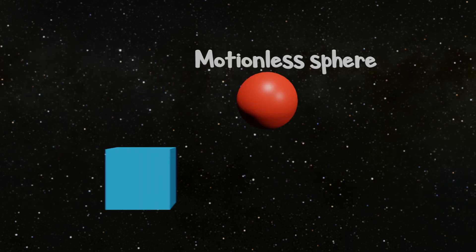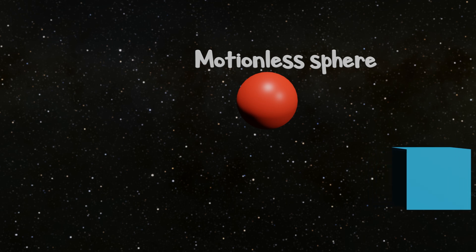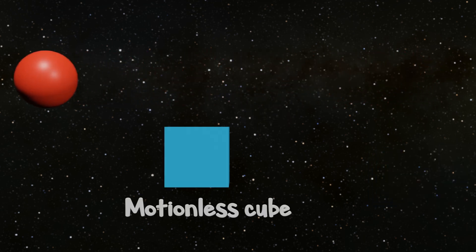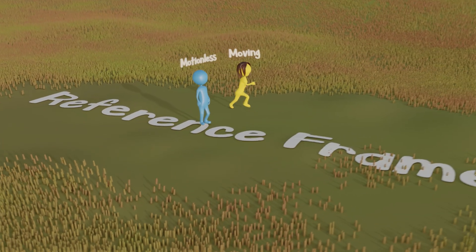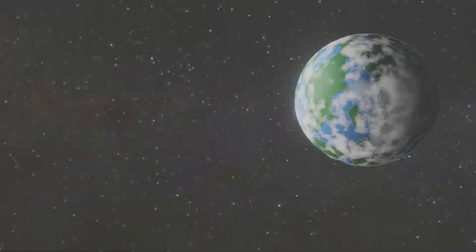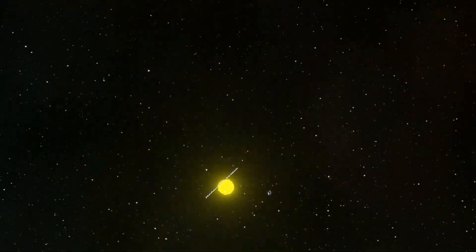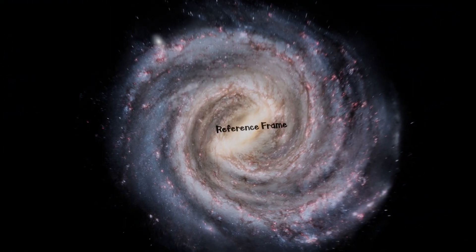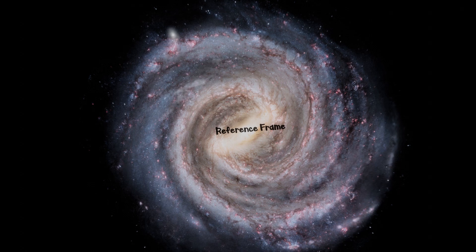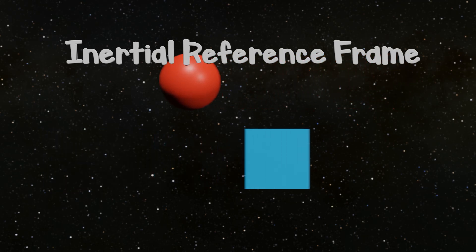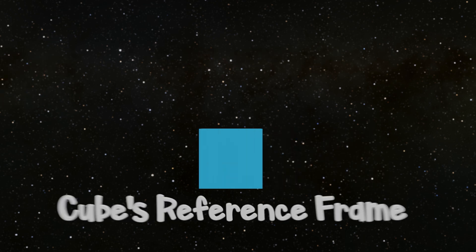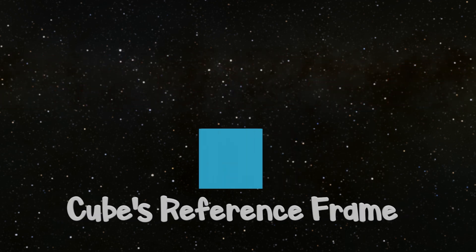A frame of reference is simply how you describe something's motion based off something you define as motionless. A good rule of thumb is using whatever you're gravitationally bound to. So your and my motion would be defined by the Earth, the Earth's motion would be defined by the Sun, and the Sun's motion would be defined by the center of the galaxy. However, you can choose and change your frame of reference at will. The biggest difference between an adept and struggling physics student is how you choose your frame of reference.